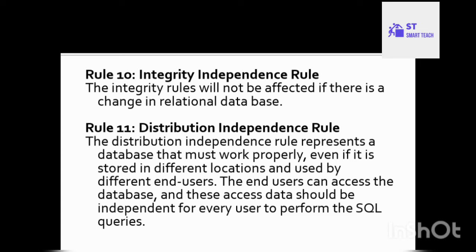Rule number 11 is the Distribution Independence Rule. This rule states that a database must work properly even if it is stored in different locations and used by different end users. We can store data across different computer systems or locations, and different users can use it. End users should be able to access the database independently and perform SQL queries regardless of where the data is distributed.